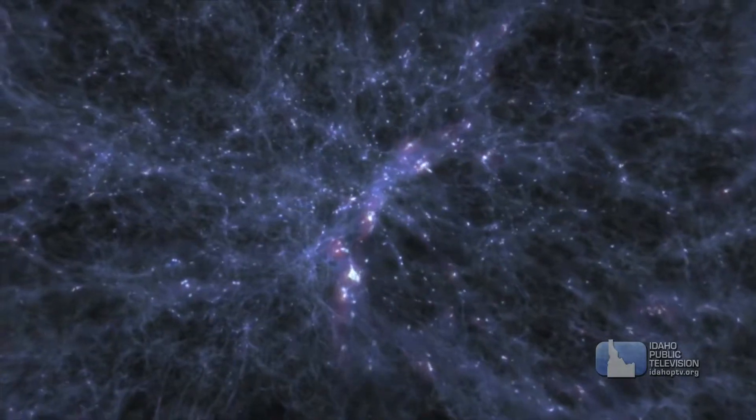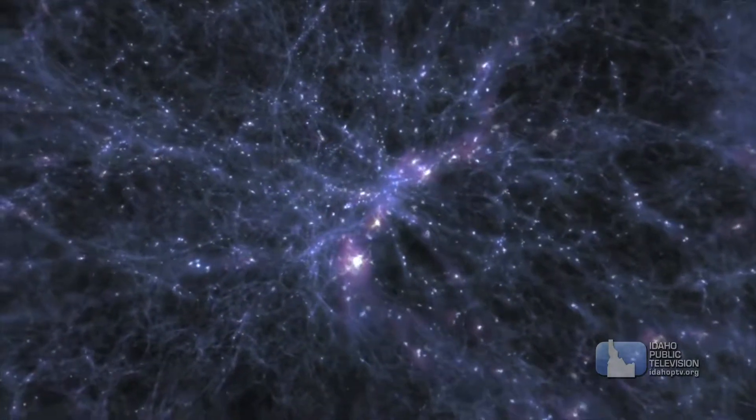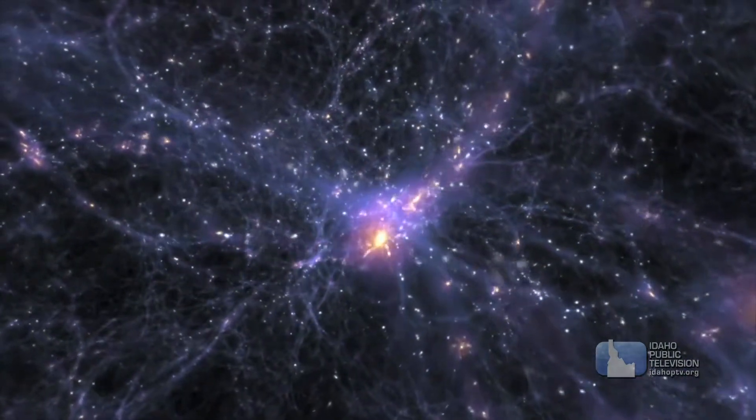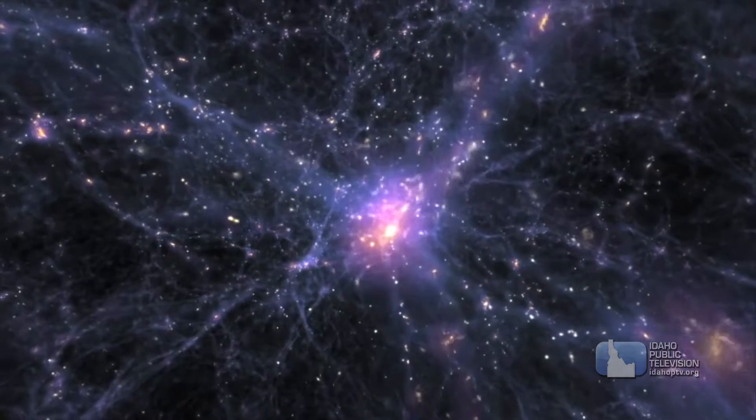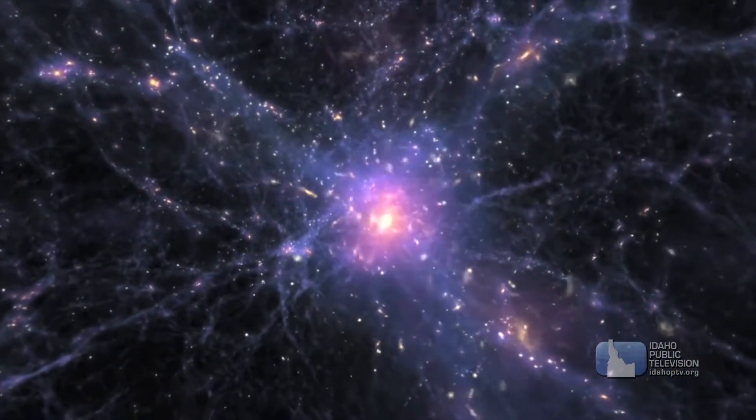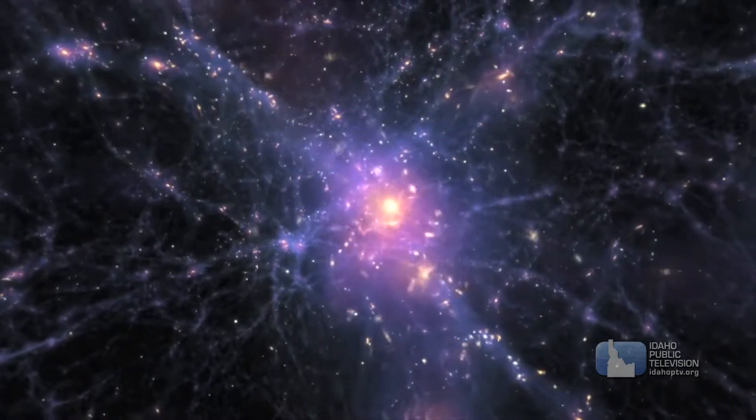The sun formed about 4.5 billion years ago from a huge cloud of gas, dust, and ice called a nebula. The cloud's gravity was so strong it started swirling and being pulled inward. And as it collapsed, the center got very hot and material there formed the sun.